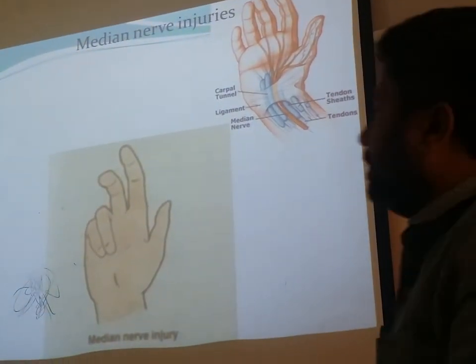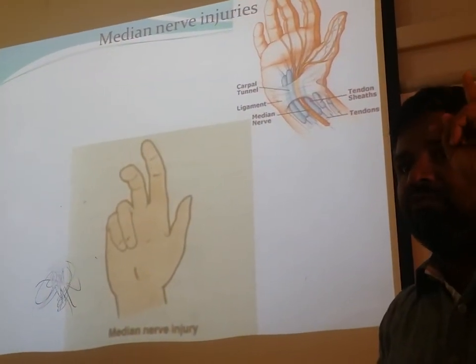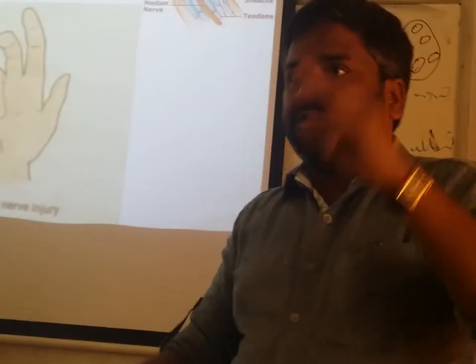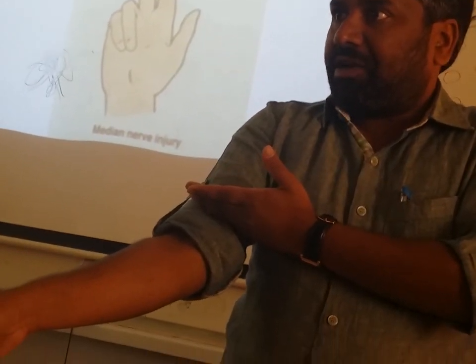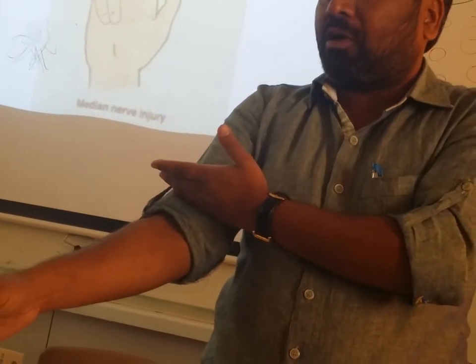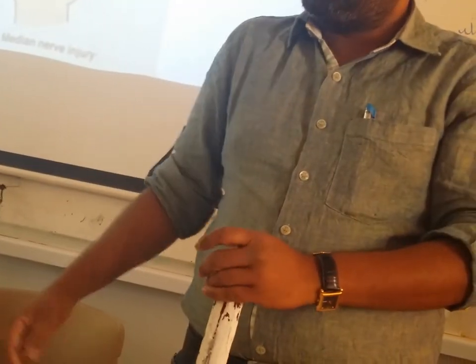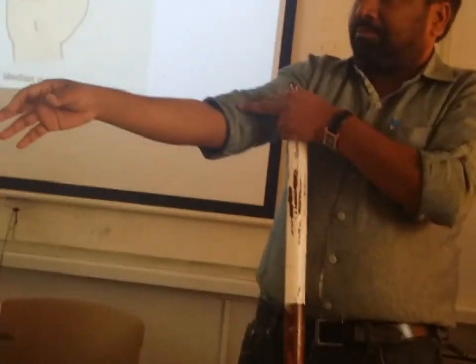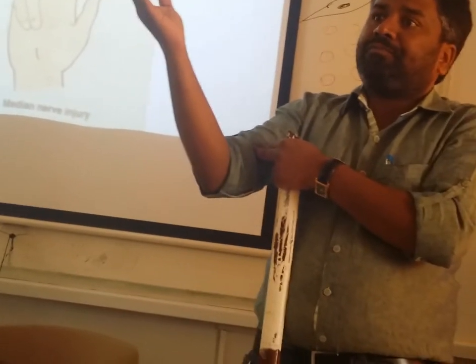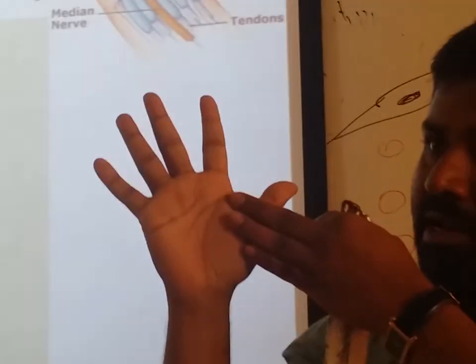The median nerve is commonly injured at two sites. Number one is supracondylar fractures of the humerus — especially in children when a child falls on an outstretched hand. The median nerve gets caught between the two fracture ends and is injured, causing loss of flexion. The muscles of the thenar eminence go for paralysis and wasting — they lose their bulk — and it looks like an ape's hand, called the ape hand deformity.